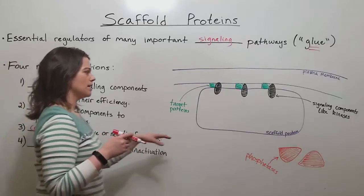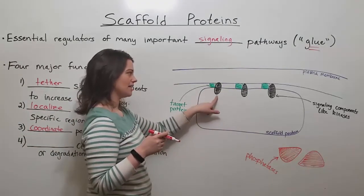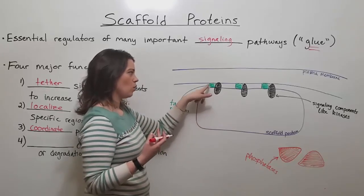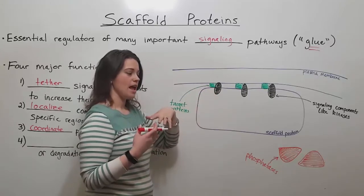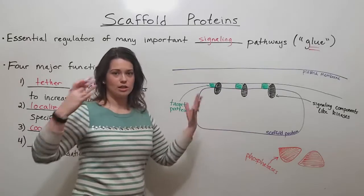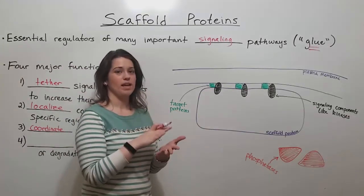For example, scaffold proteins can ensure that signaling components like kinases are only able to activate one downstream target, rather than activate multiple downstream targets and having large amplification. Scaffold proteins can keep it from getting out of control.